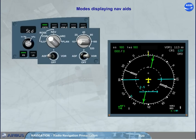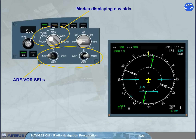In all modes except plan, the navaids can be displayed if the ADF/VOR selectors have been switched to VOR or ADF position. Here, as an example, the ROSE VOR mode with ADF1 and VOR2 selected.